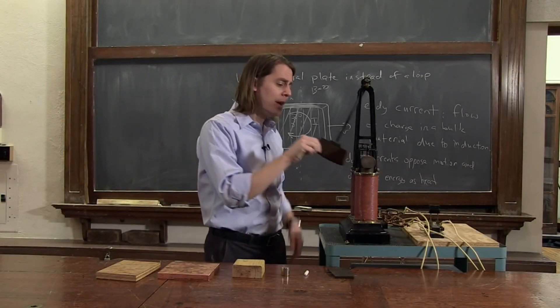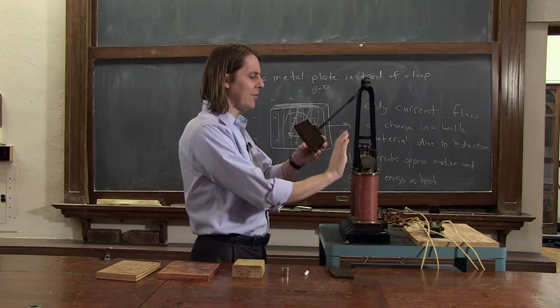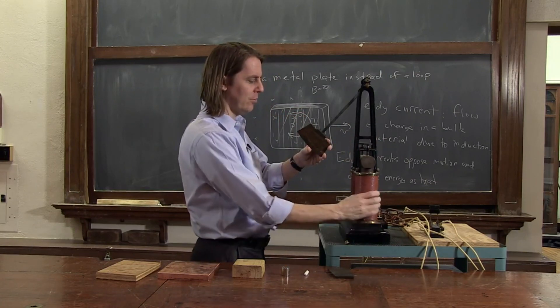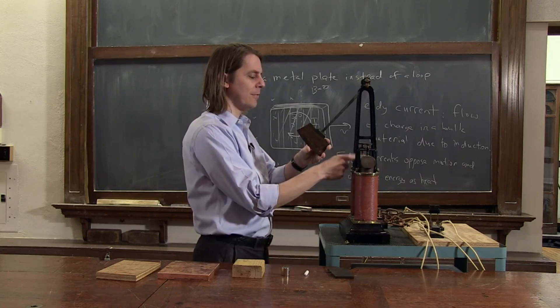So now we're going to see some eddy currents in action. Here is a copper plate that will have eddy currents in it, and here we have an electromagnet. We're going to pass a big current through these iron cores and they become magnetized and it makes a large magnetic field in this gap.